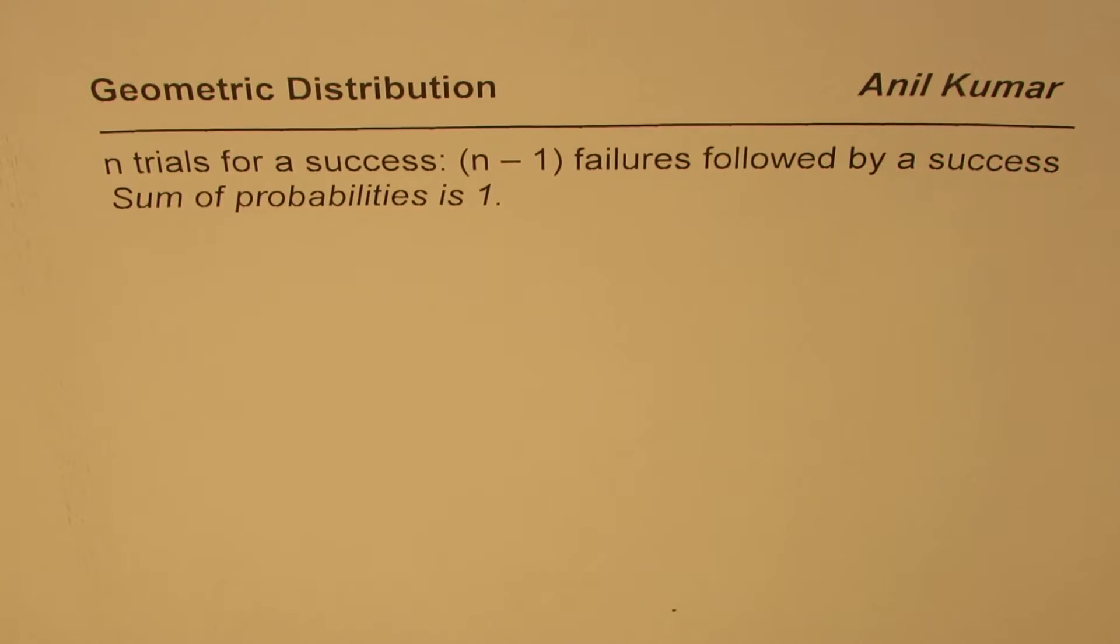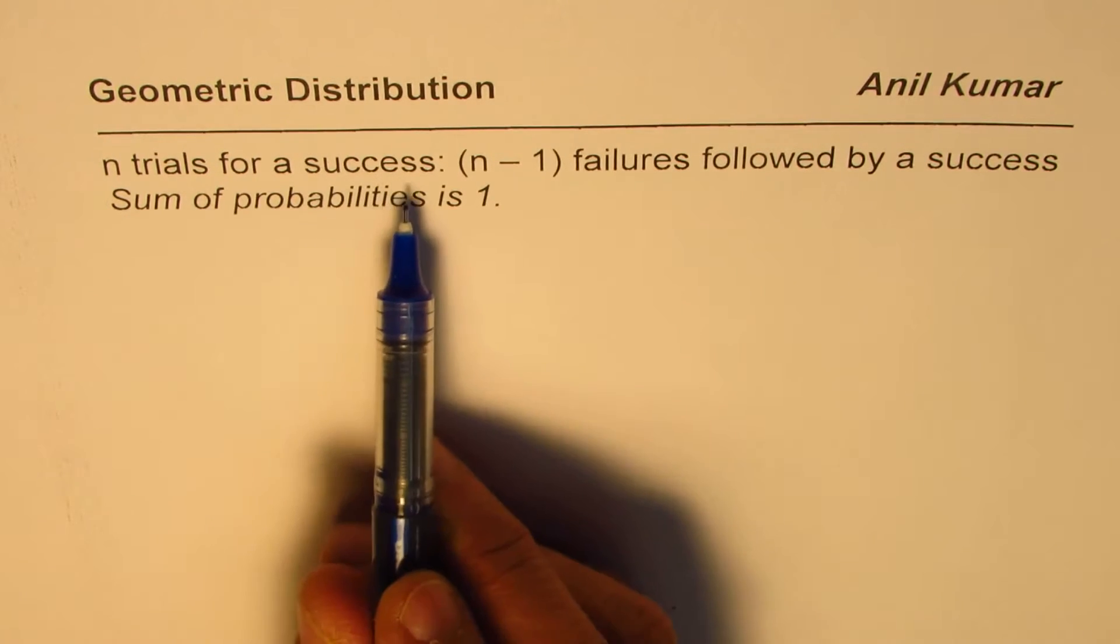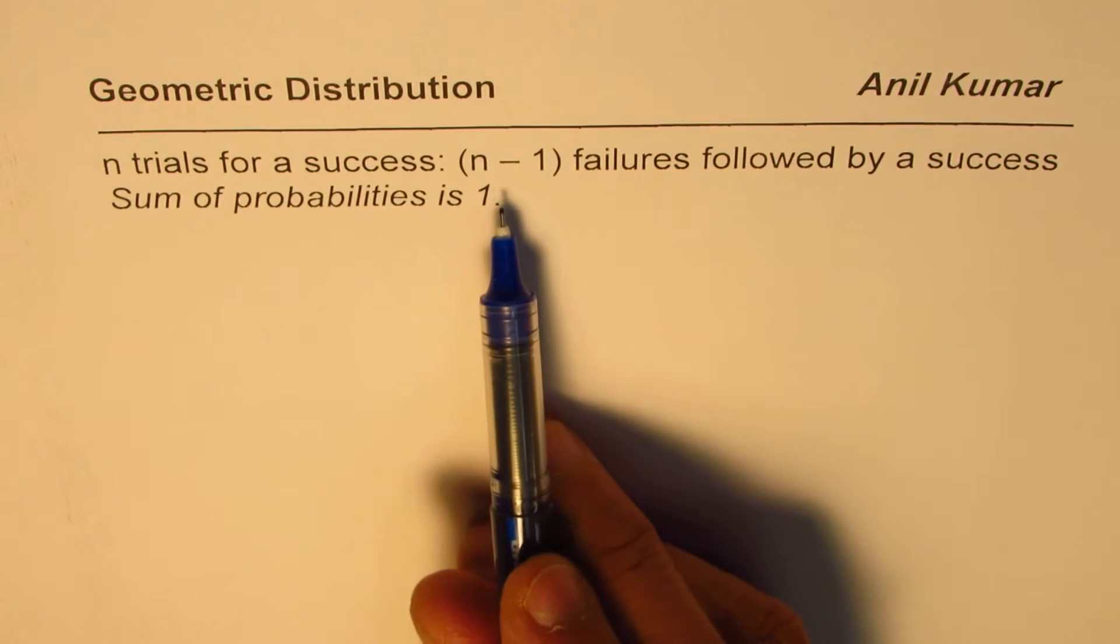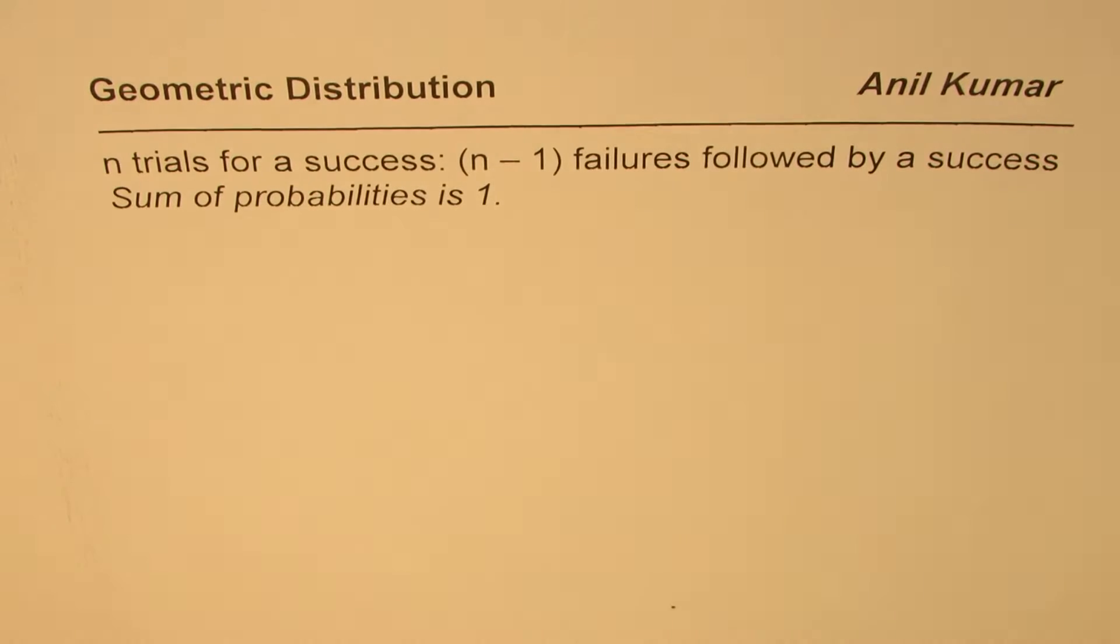I'm Anil Kumar. We'll discuss geometric distribution in this particular video. We know that in geometric distribution, we may have n trials for a success. That is to say, the first n minus 1 trials are failures, and that is followed by a success.